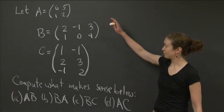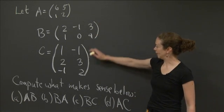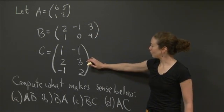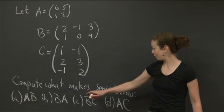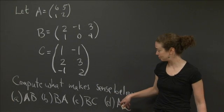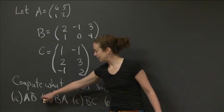So we have three matrices here. We have A, B, and C. And what I want you to do is I want you to compute what makes sense below. I have four products of matrices below. A is A times B.